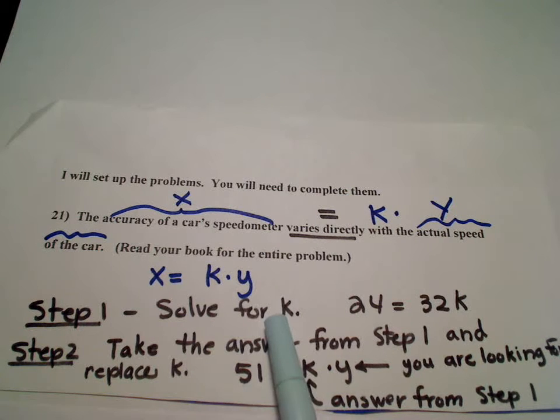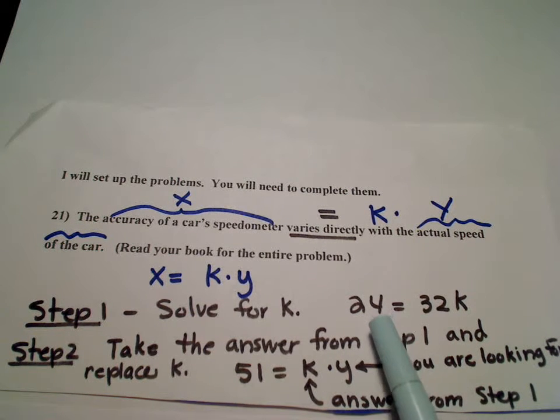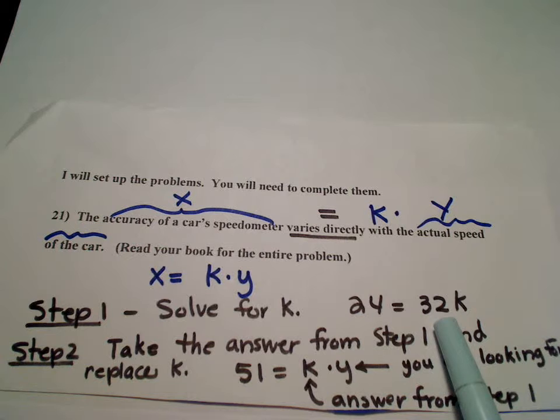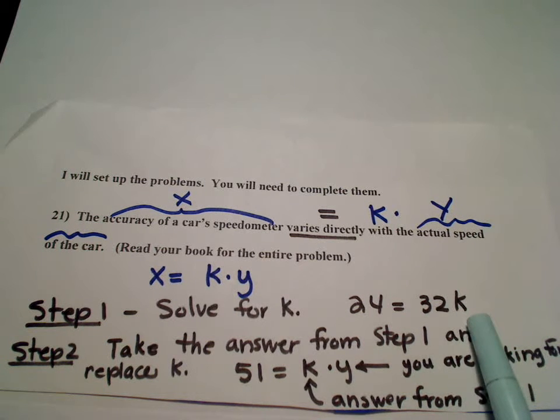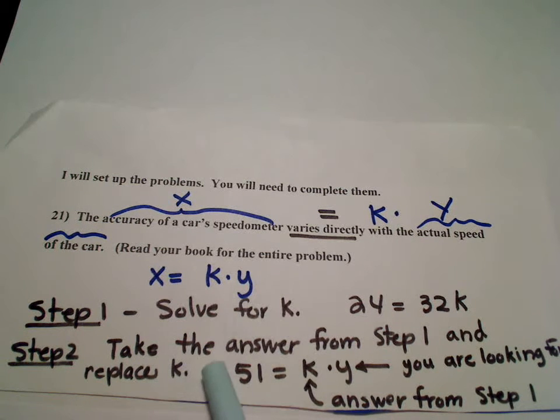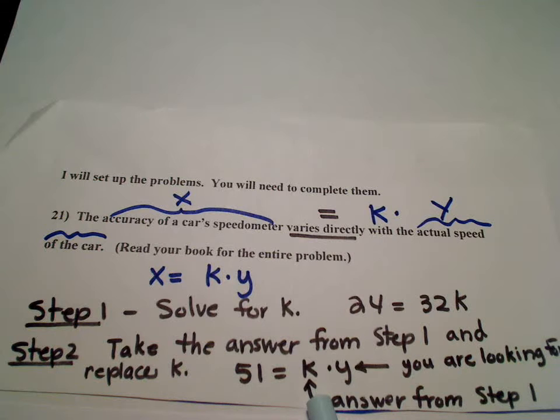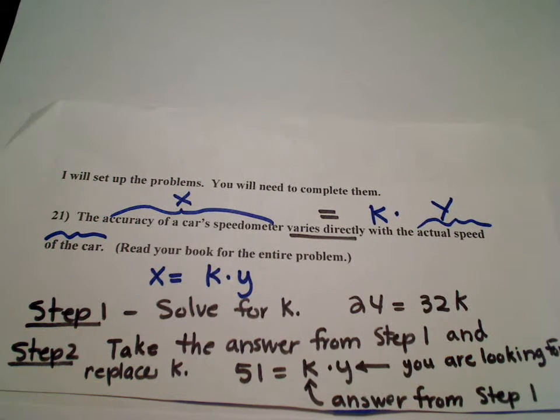First step is always solving for k. And here it is, 24 is equal to 32 times k. Whatever that answer is, don't forget. Step number 1, you'll start all over again. This time though, you do have an answer for k. And therefore, you can go ahead and just solve the problem looking for the y.